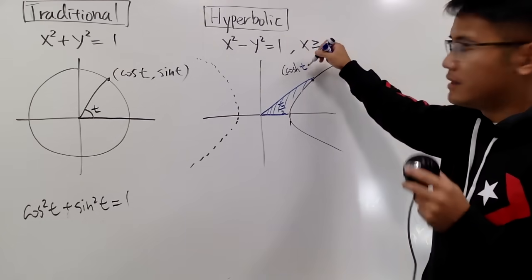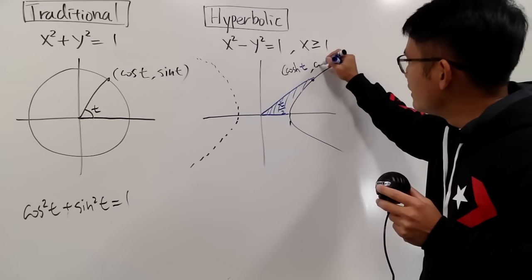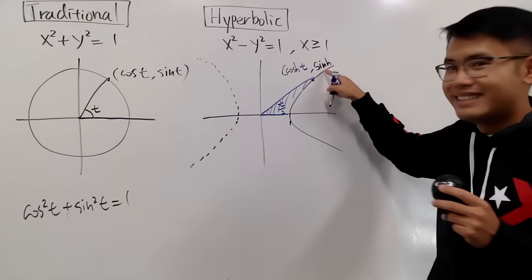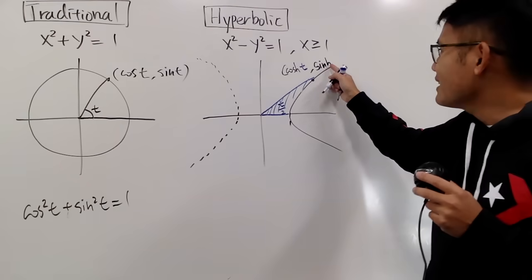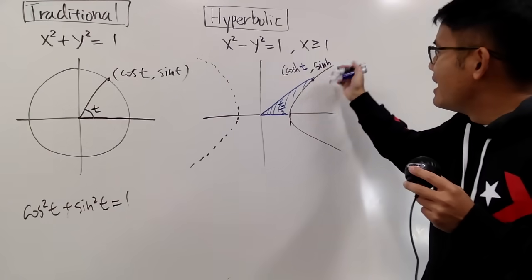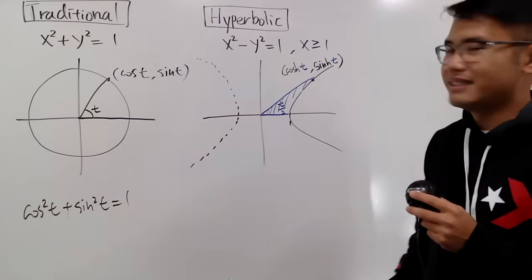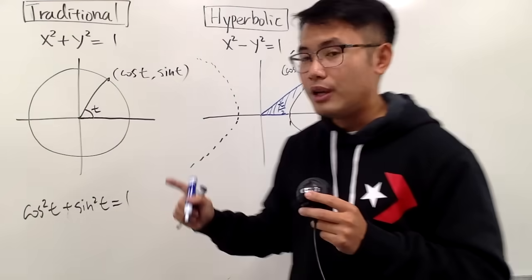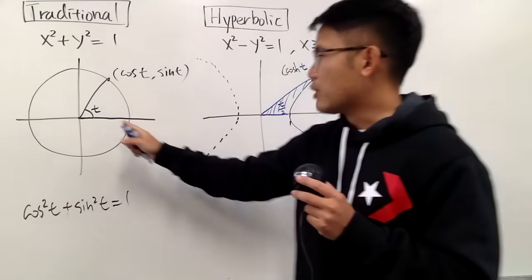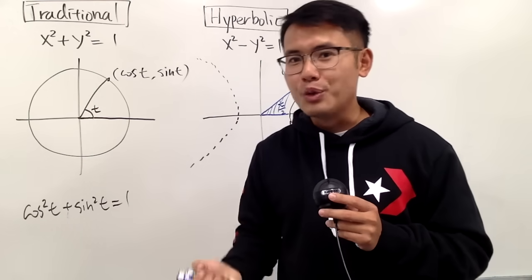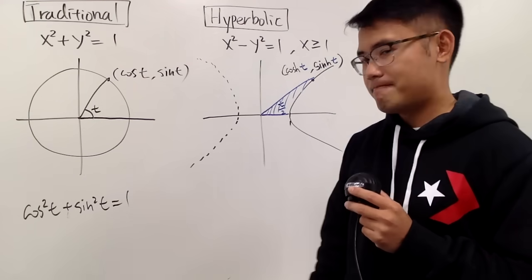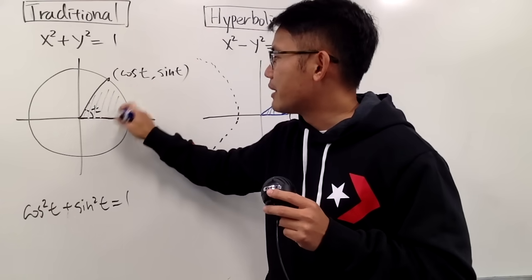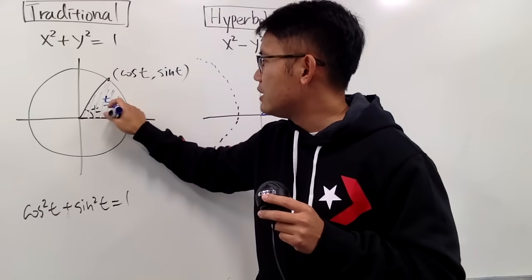The hyperbolic cosine is the x value. The hyperbolic sine — written as sinh — is the y value, and the input is also t. Let me finish the rest and then let's look back to see if there is a connection. Earlier I told you t is the angle in the traditional trig functions, but the beauty is that in fact, this area right here for the unit circle is also t over 2.